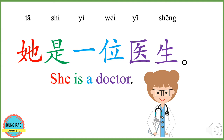他是一位医生。 We have learned 个 is the most commonly used measure word in Chinese. You could say 一个医生, but you could also say 一位医生. 一位医生 is more formal — it sounds more polite and respectful. 他是一位医生 means he is a doctor.